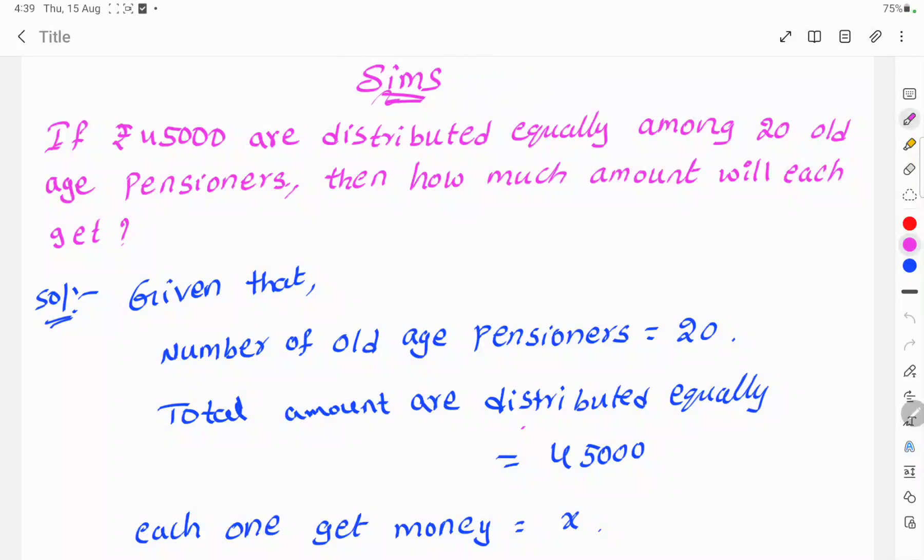Hi, welcome to C&C. Today's topic: if 45,000 rupees are distributed equally among 20 old age pensioners, then how much amount will each get?